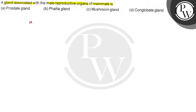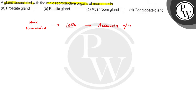Here we are talking about males and mammals. If we talk about accessory glands, they include the prostate gland, seminal vesicles, and bulborethral gland.